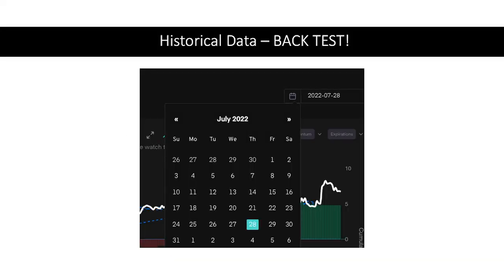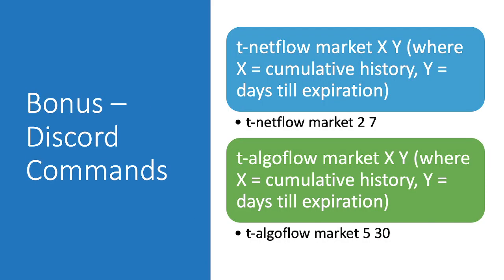An honorable mention: in the discord, two commands you can use for market net flow are T-net-flow-market, which gives you cumulative history with expiration dates, and T-algo-flow-market, which gives you cumulative history with 30-day expirations. Just something to keep in mind if you're in the discord.